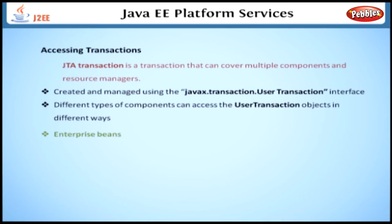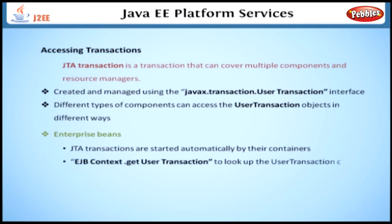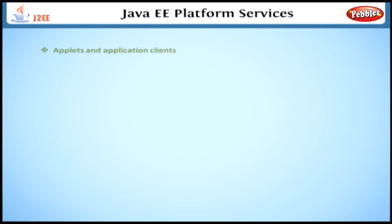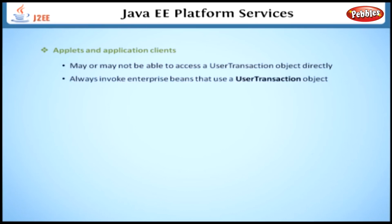Let's start with enterprise beans. JTA transactions are started automatically by their containers. Enterprise beans that use bean-managed transactions use the method ejbContext.getUserTransaction() to look up the user transaction object. Next, applets and application clients may or may not be able to access a user transaction object directly, because it depends on the capabilities provided by the container. However, they can always invoke enterprise beans that use a user transaction object.